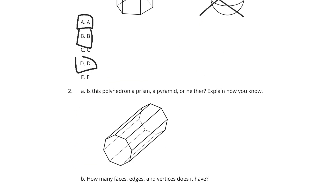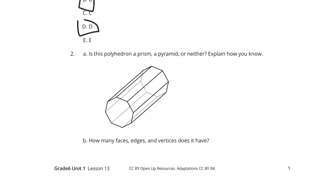Question 2: Is this polyhedra a prism, a pyramid, or neither? Explain how you know. Well, it is a prism. You have two bases, 1 and 2.